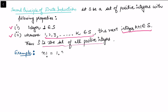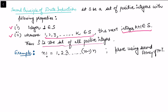Let us consider an example to understand the second principle. We want to show that n factorial equals 1 times 2 times 3 up to n minus one times n. Taking the first condition, when n equals 1, we know that 1 factorial equals 1. When n equals 2, we have 2 factorial equals 2 times 1 factorial, which equals 2 times 1.